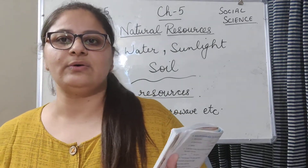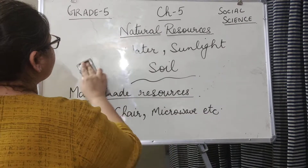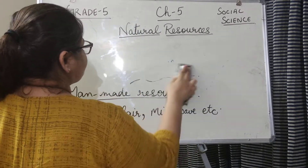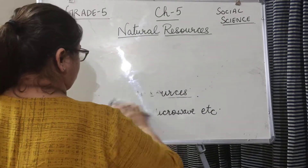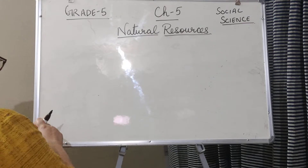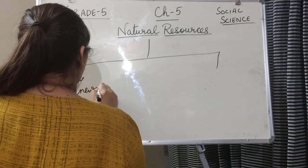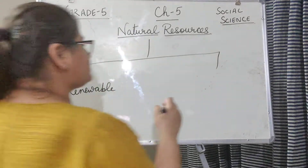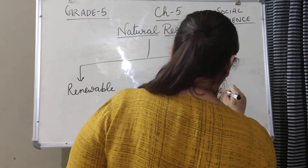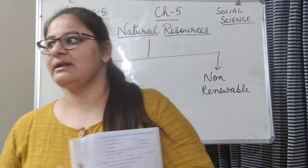Now we are dividing natural resources into two categories. Those two categories are renewable resources and non-renewable resources. So we are categorizing natural resources into two parts: the first one is renewable, and the second one is non-renewable. These are the two parts of your natural resources.